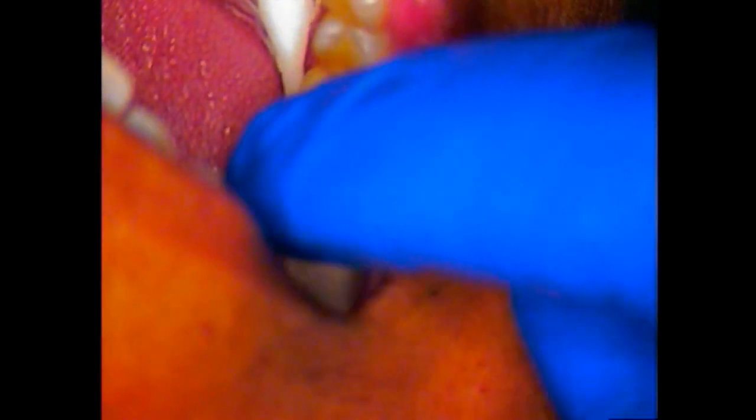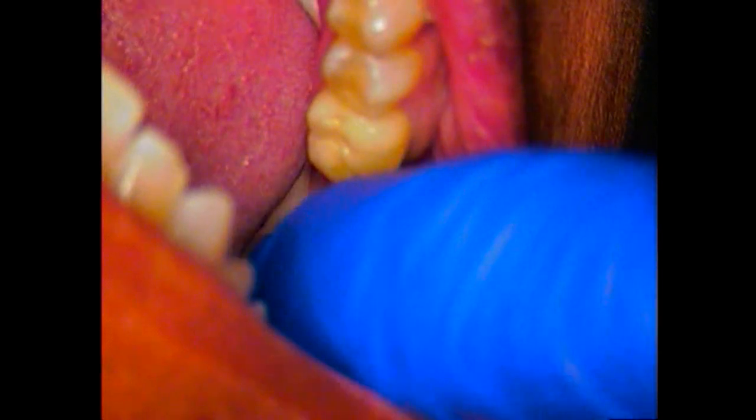And we're going to go ahead and place that now. This is the healing abutment. That's the size of it. It's for a very wide neck implant, which we have here. Molar size. Second molar position. And let's see if we can do a little hand tightening first.